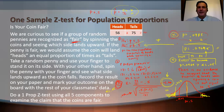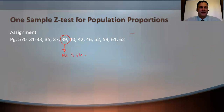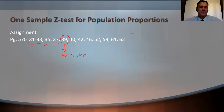That's all for one sample Z test for population proportions. If you have questions, let me know. I'll see you for the next lesson on population means. For your first assignment, question 39 is the first one where you do all five steps. The earlier questions give you pieces of problems and ask for partial conclusions. Have a good rest of your day — see you again soon.